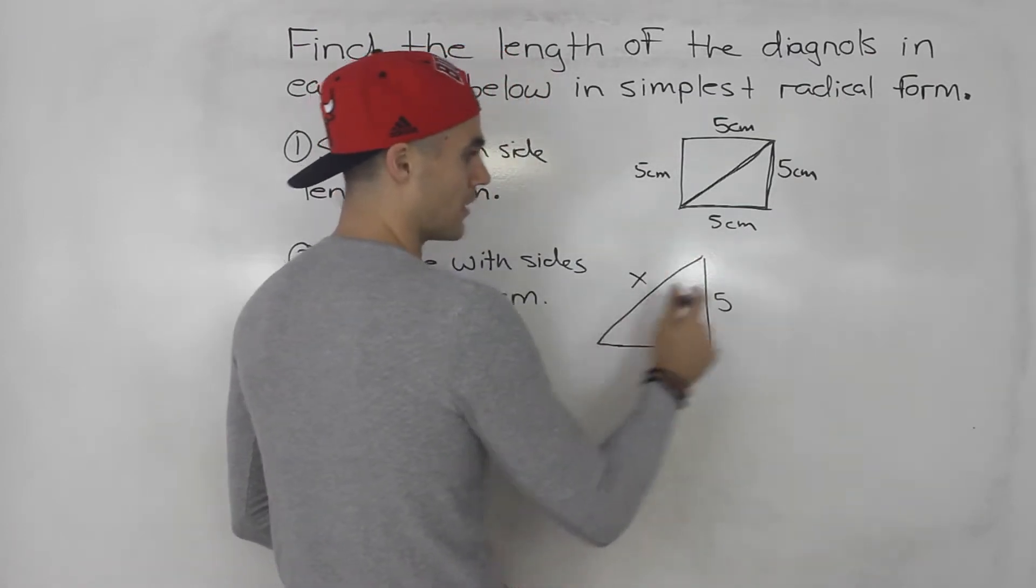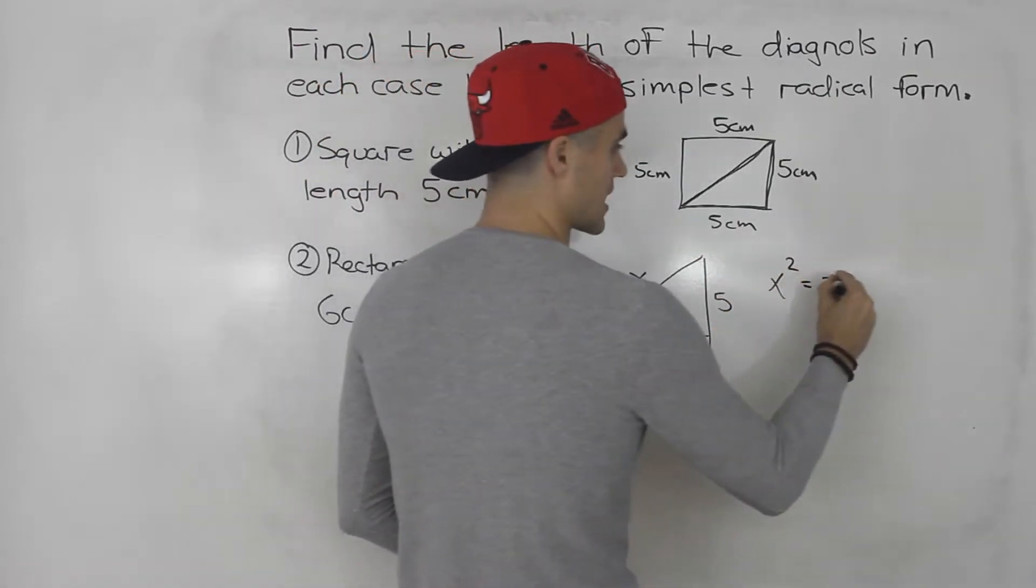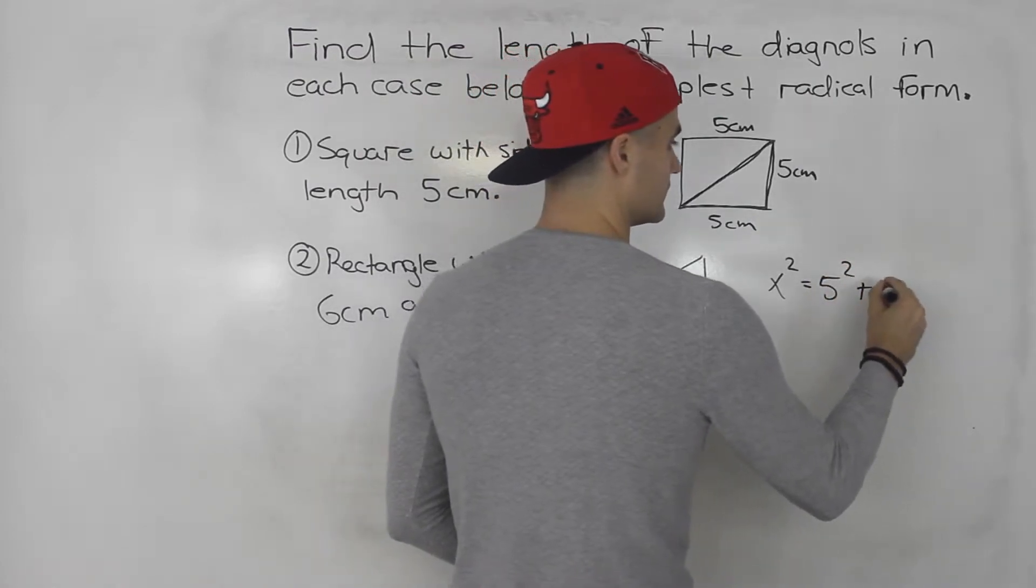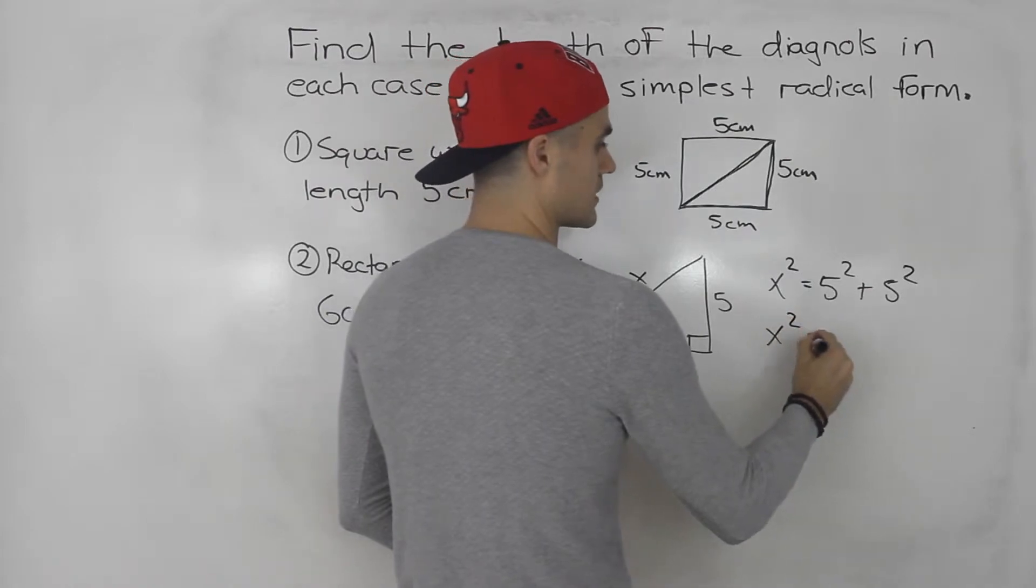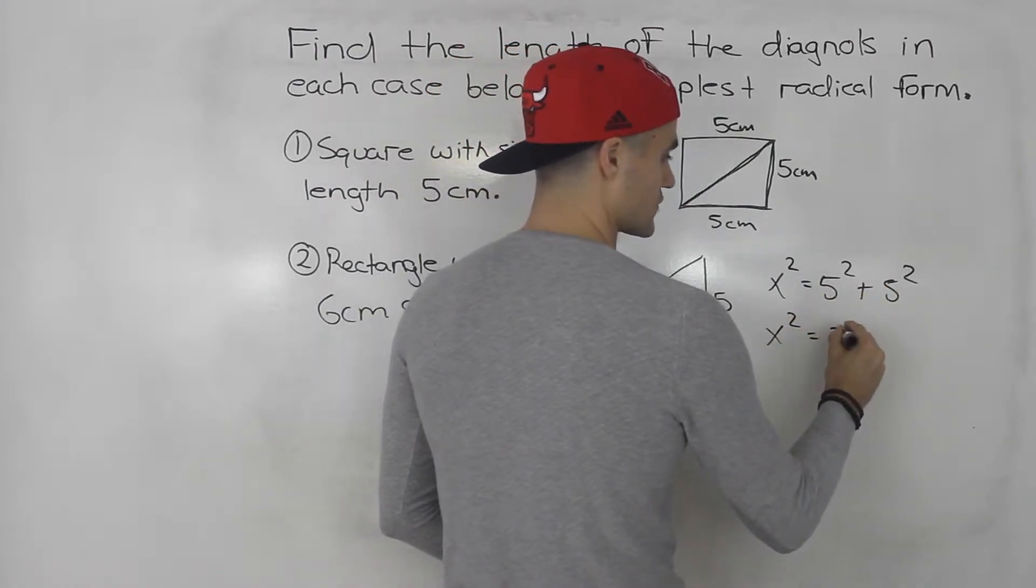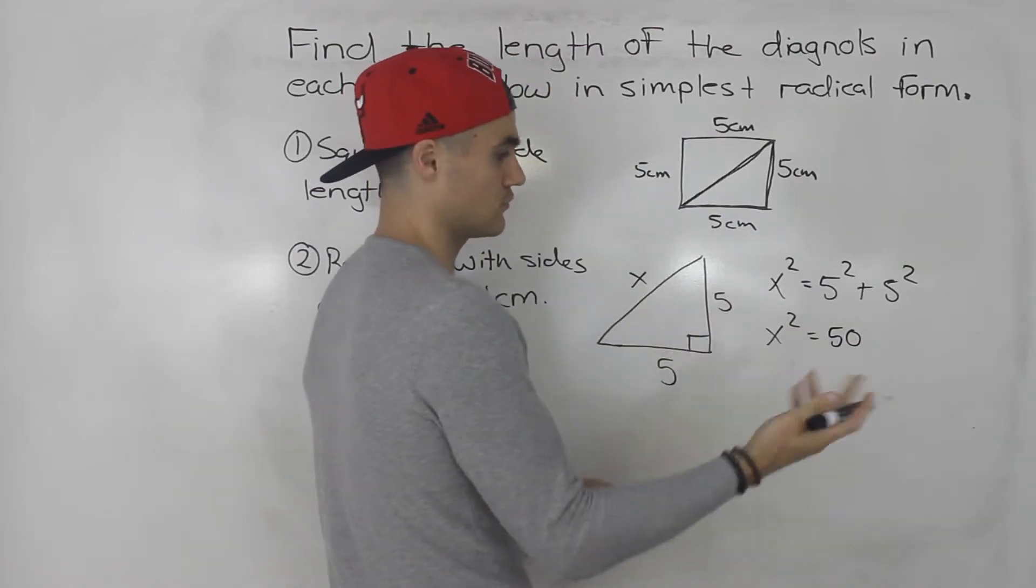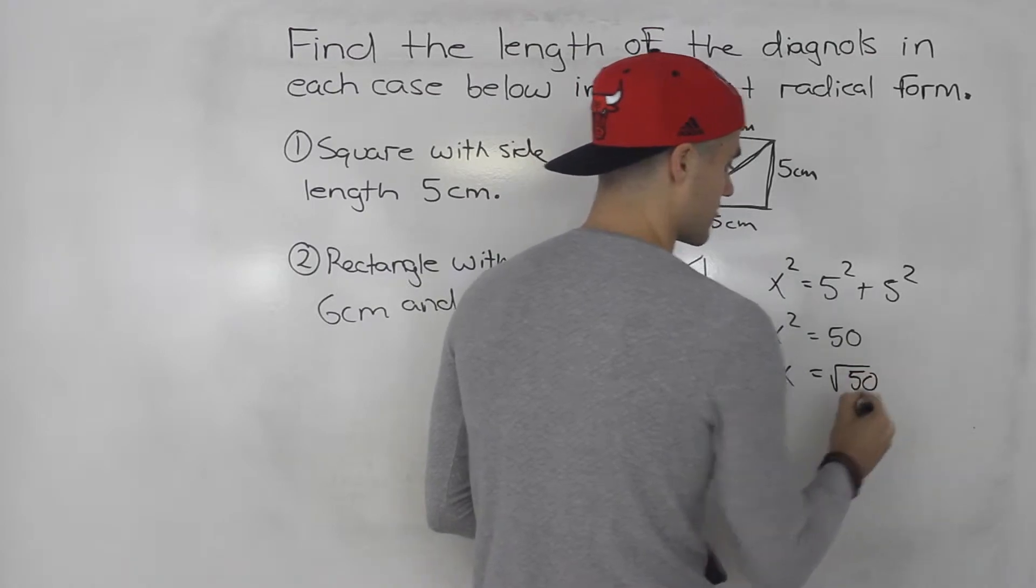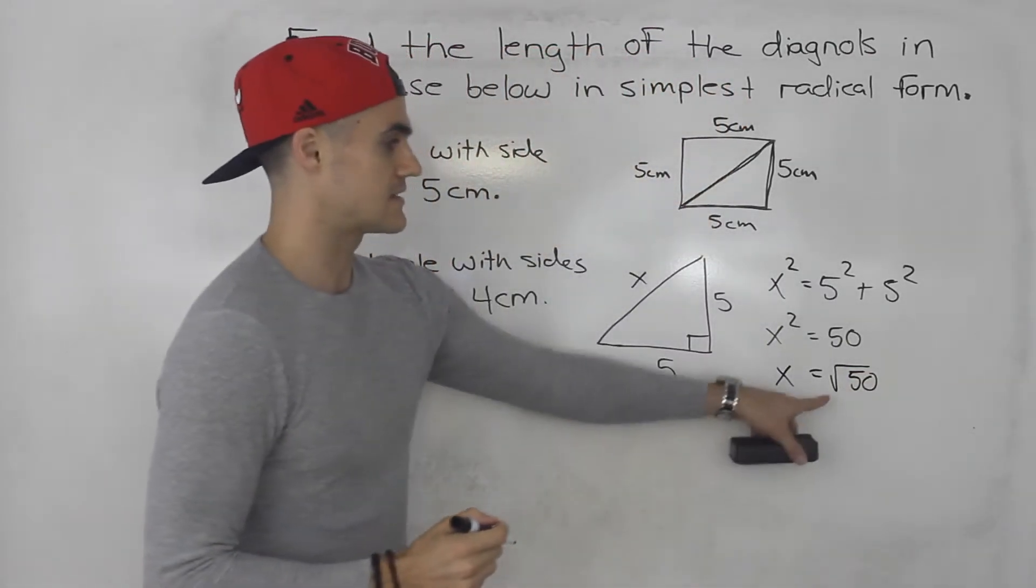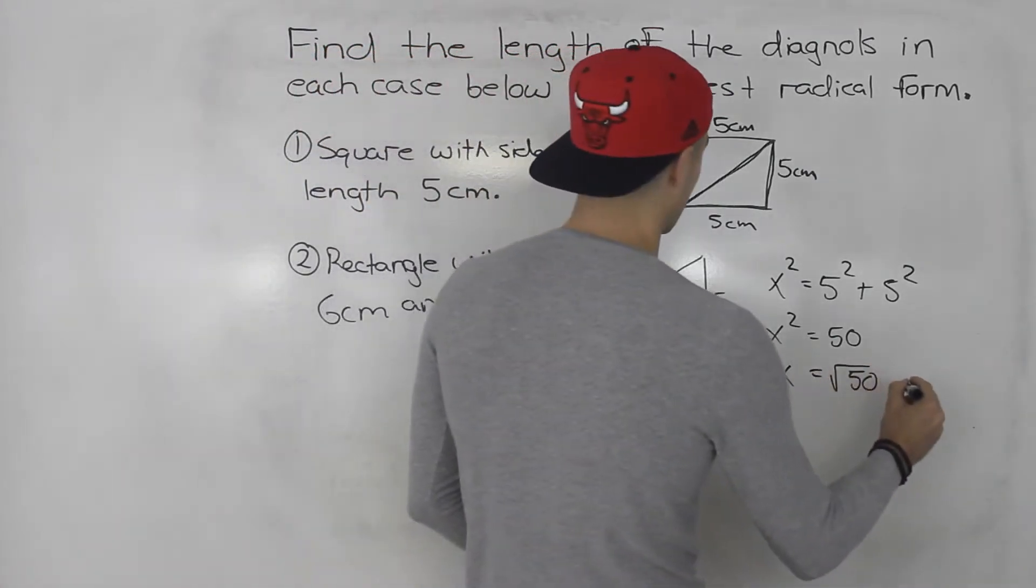So basically, the hypotenuse squared is equal to the sum of the sides squared. So this would be x squared equals 25 plus 25, which is 50. And then to get the x by itself, we square root both sides. So x is equal to the square root of 50. And that is the length of the diagonal, root 50 centimeters.